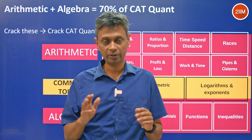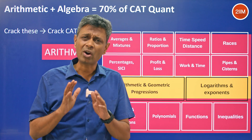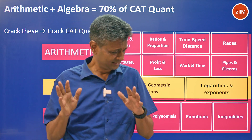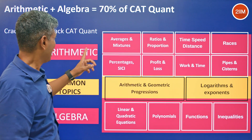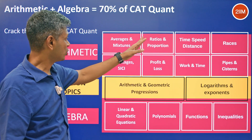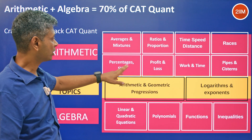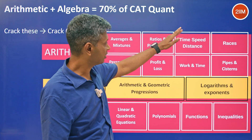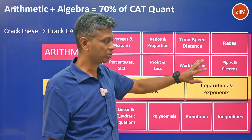What do we define as arithmetic versus algebra? Arithmetic covers averages, mixtures, ratio and proportion, percentages, simple interest, compound interest, profit and loss, time-speed-distance, races, work-time, and pipes and cisterns — all of these are classic arithmetic topics involving simple numbers.